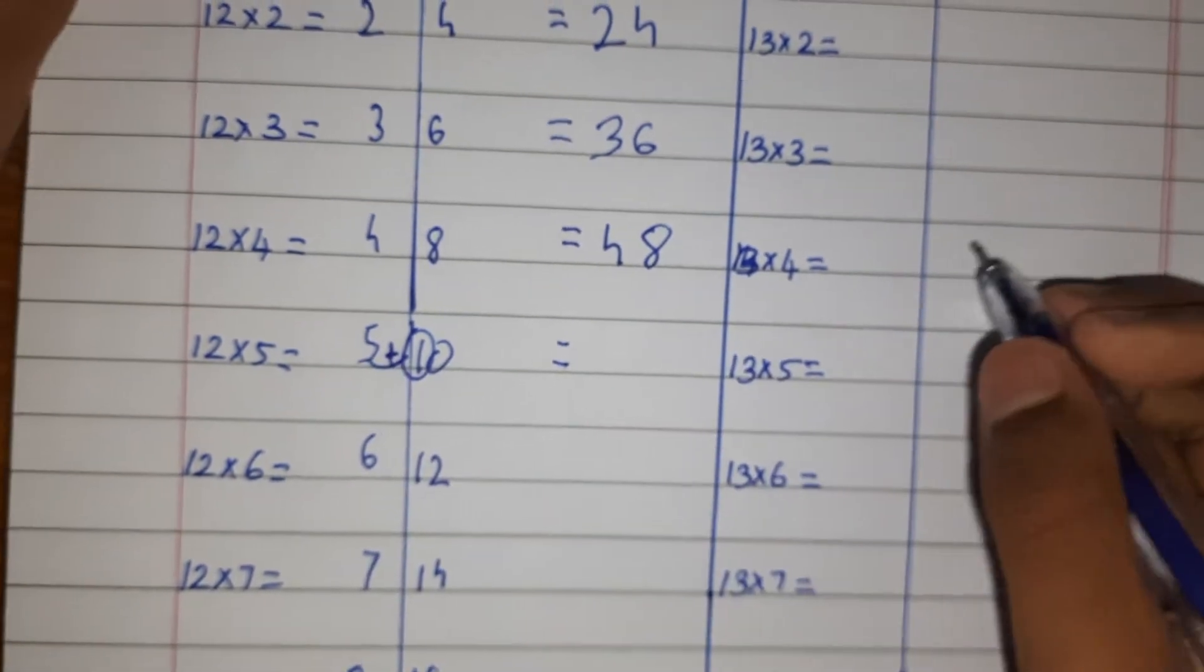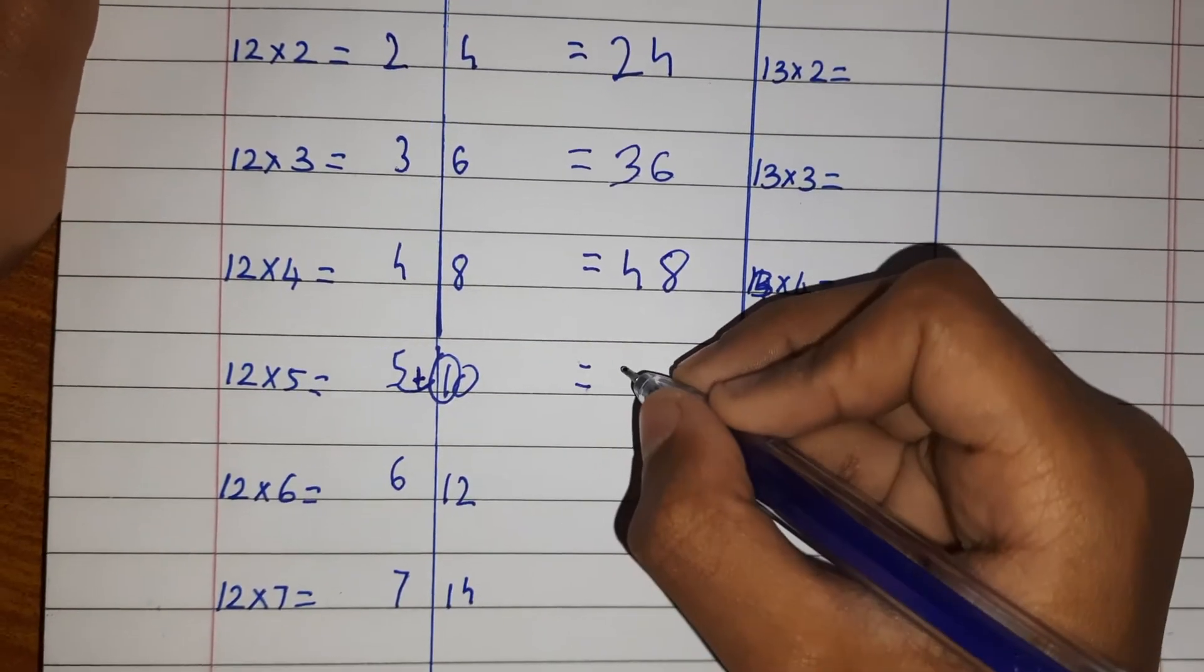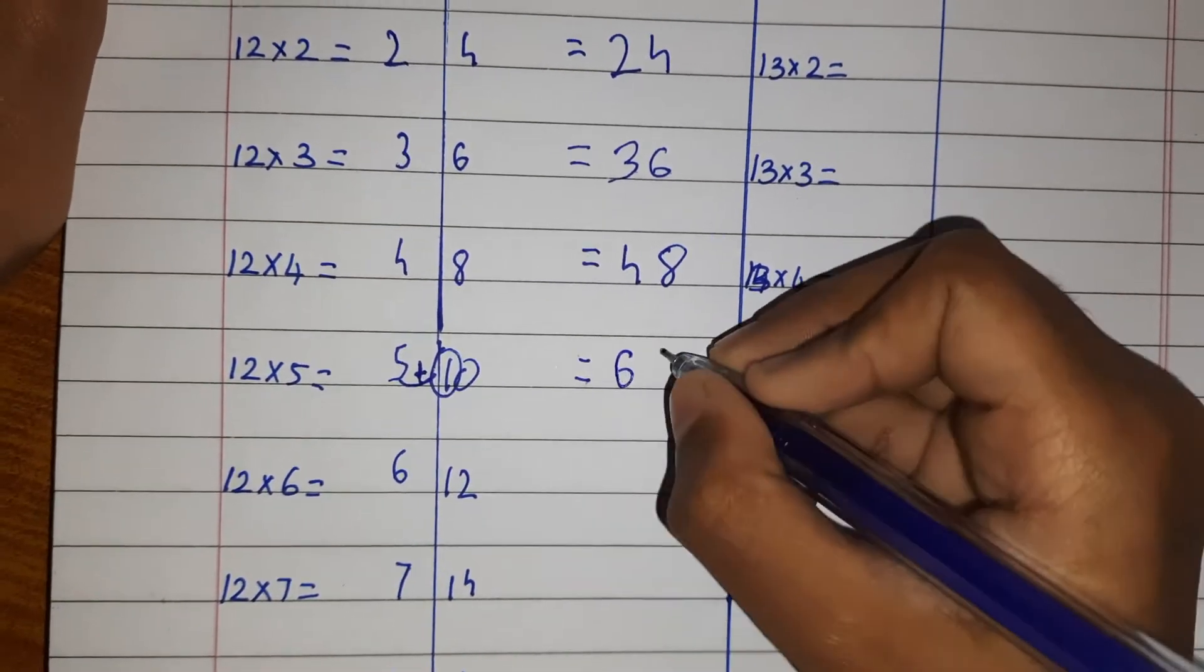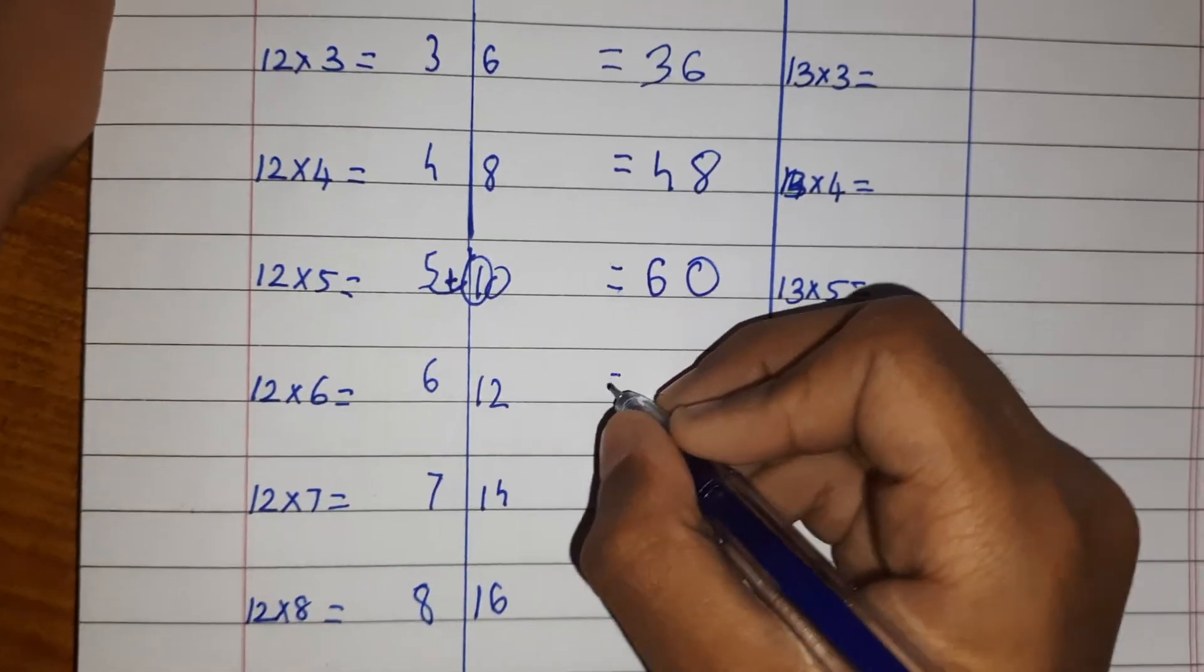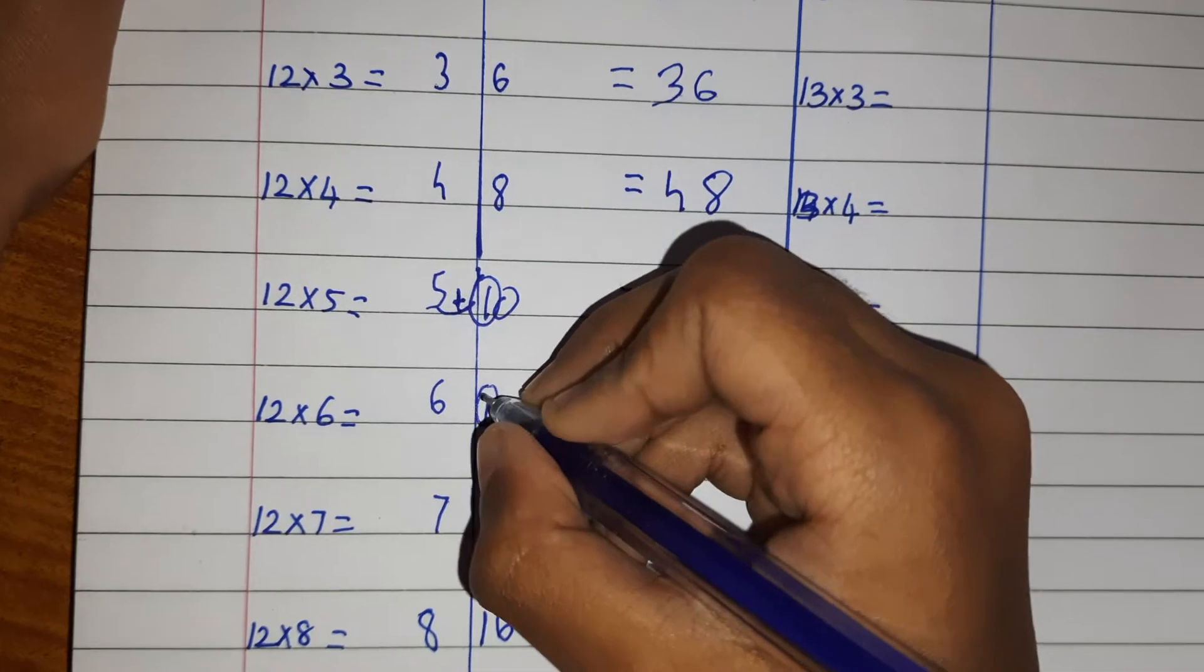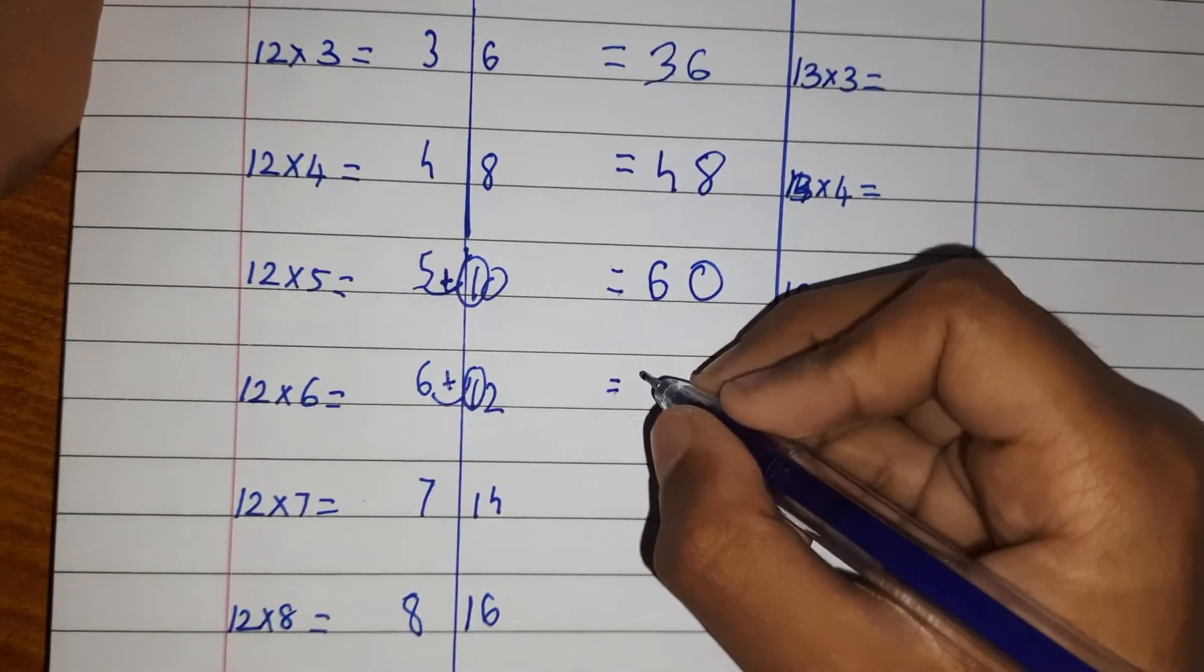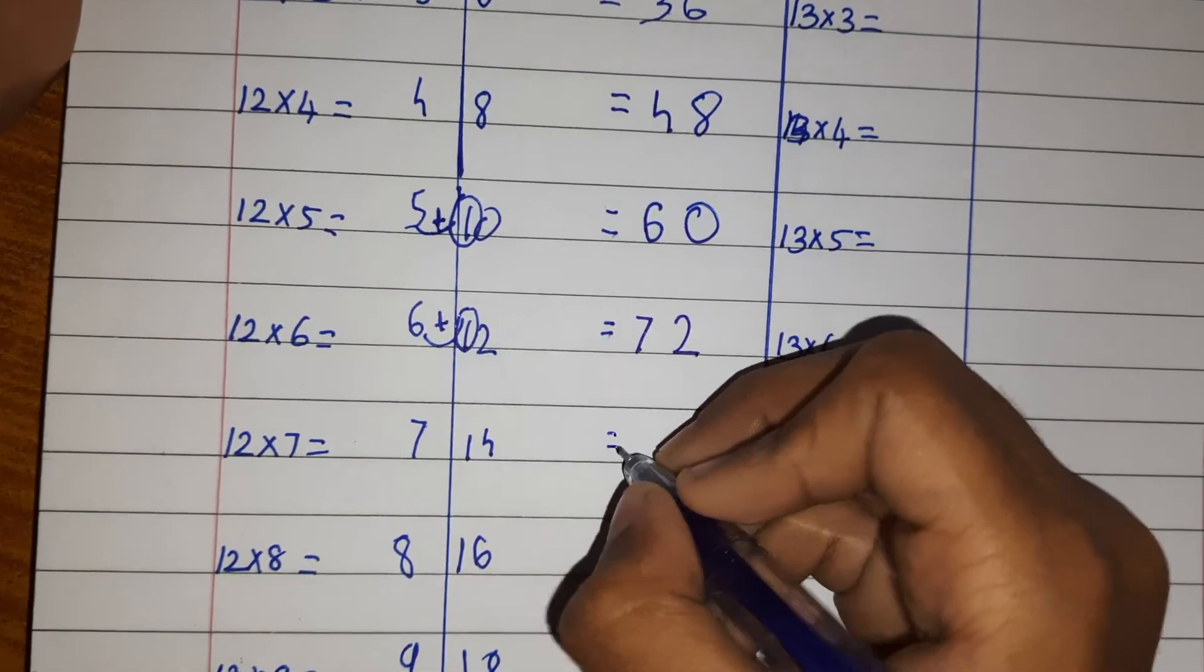Now I'm going to add them. I perform six and zero, which means 60. So next, take this one and add to the six, then 72. Like that you do it.